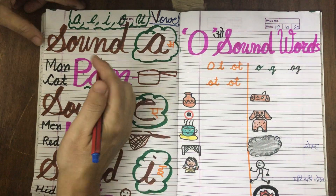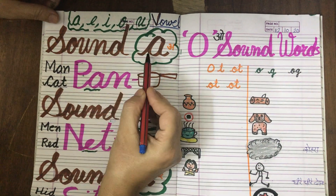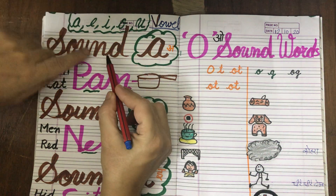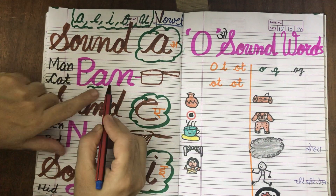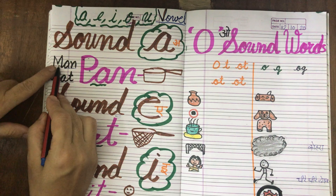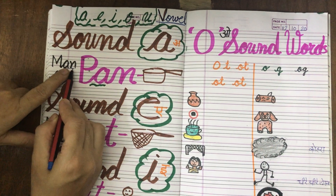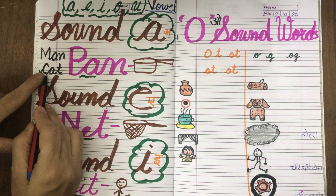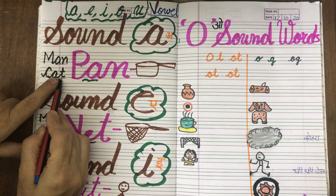A little while ago we learnt sound A and the sound of A is A. P, N, pan. M, N, man. K, at, cat.